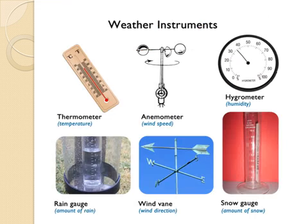You can see in the picture there are a few instruments which are used to measure the elements of weather. These are thermometer, anemometer, hygrometer, rain gauge, wind vane and snow gauge.